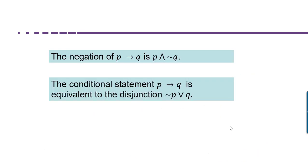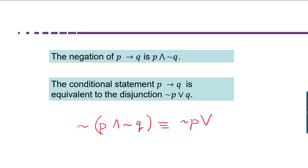So we've just seen that the negation of P implies Q is P and not Q, and that the conditional statement P implies Q is actually equivalent to the disjunction not P or Q. This actually makes sense when you think about it, because P and not Q, if we negate it according to De Morgan's law, would turn into not P or Q. In other words, the negation of the negation of the conditional is equivalent to the conditional.